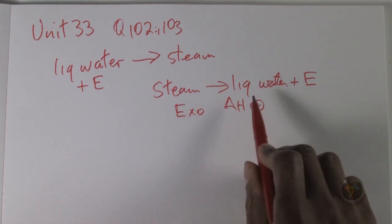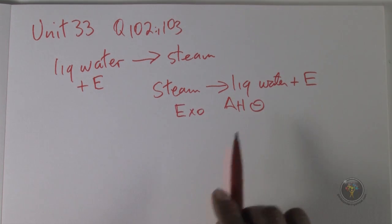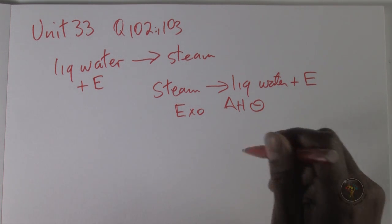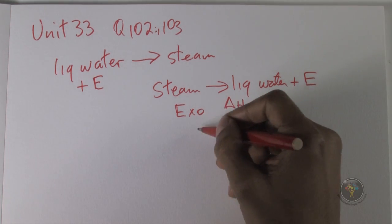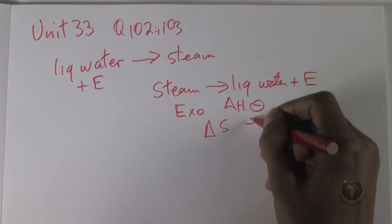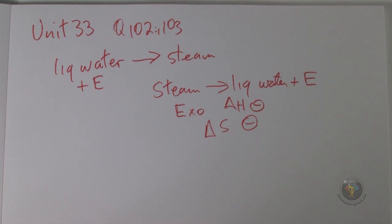This reaction going from steam to liquid water means it's getting more organized, so entropy is going down and therefore delta S must be negative. Therefore, for 102, the answer must be B where both delta S and delta H are negative.